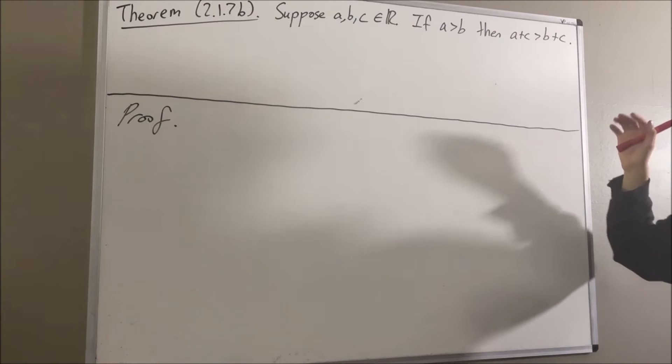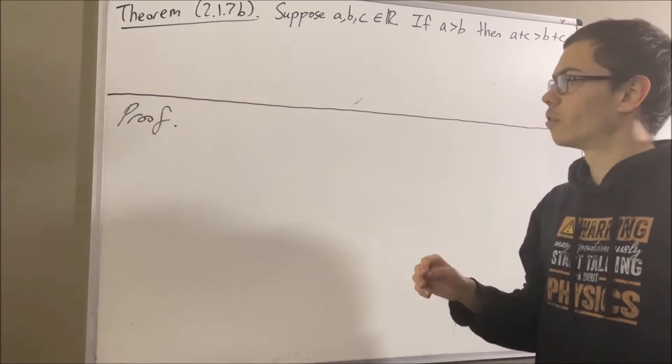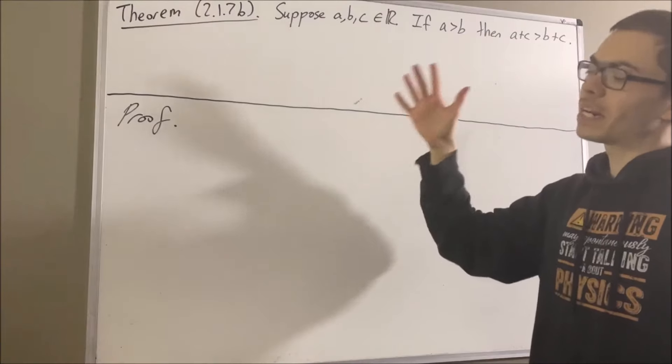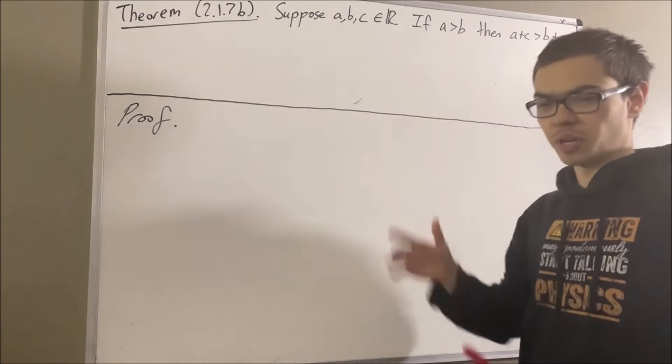Now before we get into the proof, we're going to use the following fact: for every two real numbers A and B, A minus B is greater than zero if and only if A is greater than B.